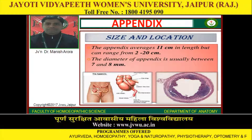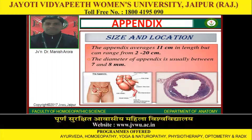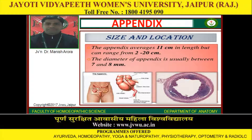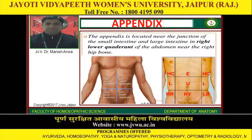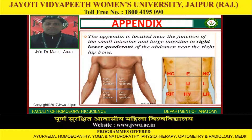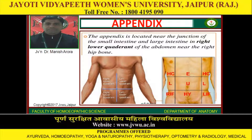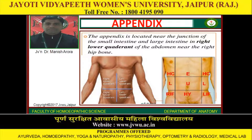Size and location: The appendix averages 11 cm in length but can range from 2 to 20 cm. The diameter of the appendix is usually between 7 and 8 mm. The appendix is located near the junction of the small intestine and large intestine, in the right lower quadrant of the abdomen near the right hip bone.